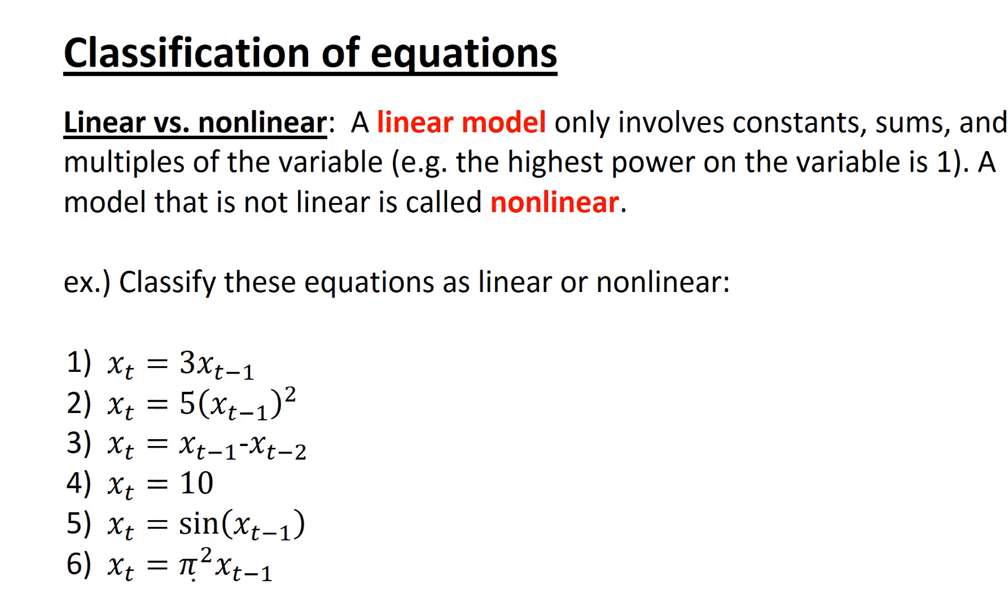So let's do some examples. Classify these equations as linear or nonlinear. In the first example, our state variable is x, and we're told that x sub t equals 3 times x sub t minus 1. Since the highest power exponent on x is only 1, this is a linear model.